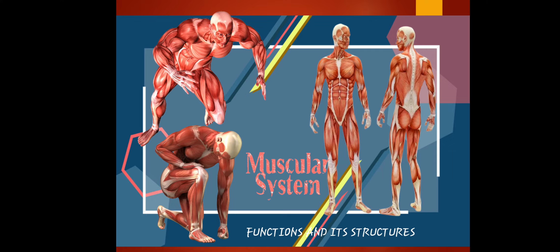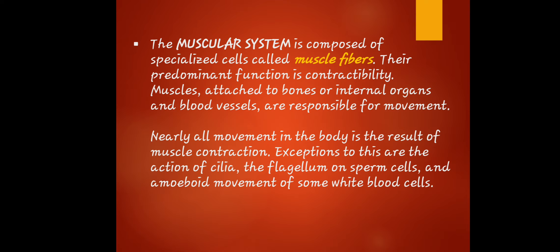Now let's discuss our main topic: the muscular system. The muscular system is composed of special cells called muscle fibers. From the root word 'muscular,' it is muscle. Their predominant function is contractibility. Muscles attached to bones, internal organs, and blood vessels are responsible for movement. Nearly all movement in the body is the result of muscle contraction.